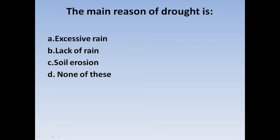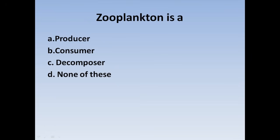Next question: The main reason of drought is — Option A: Excessive Rain, Option B: Lack of Rain, Option C: Soil Erosion, Option D: None of this. Correct answer: Option B, Lack of rain is the main reason of drought.